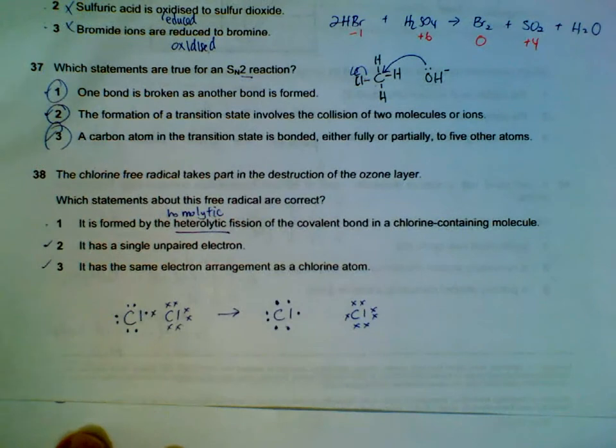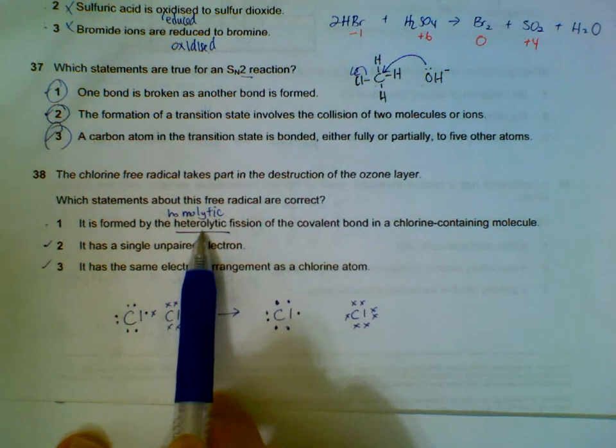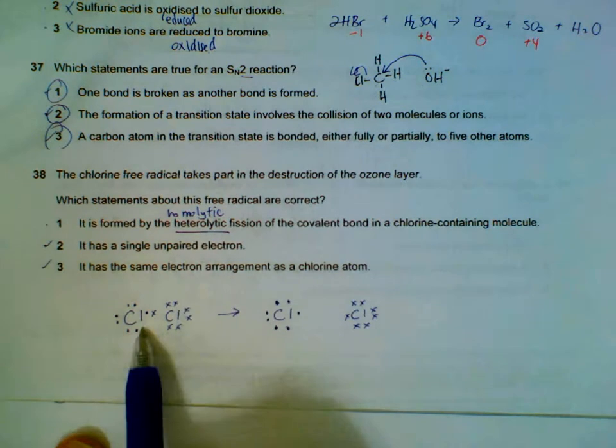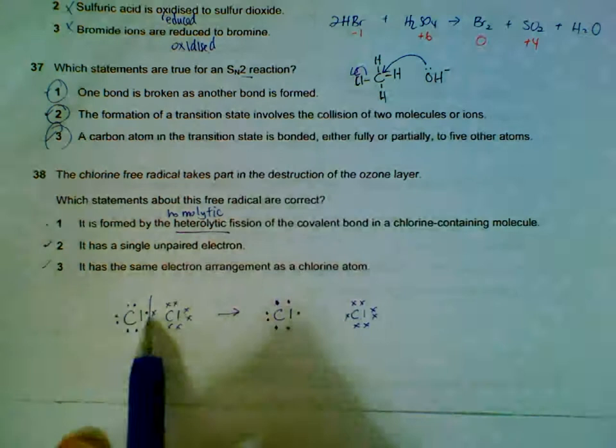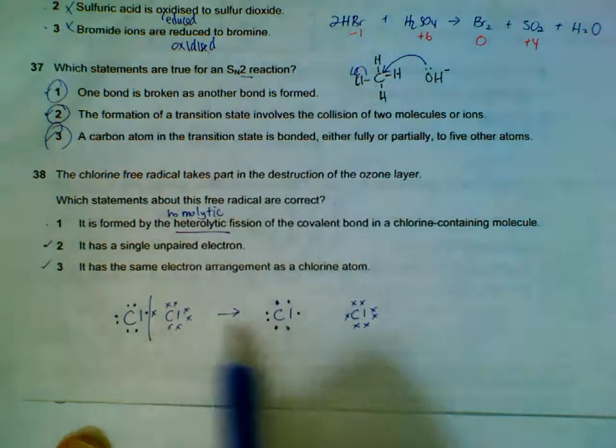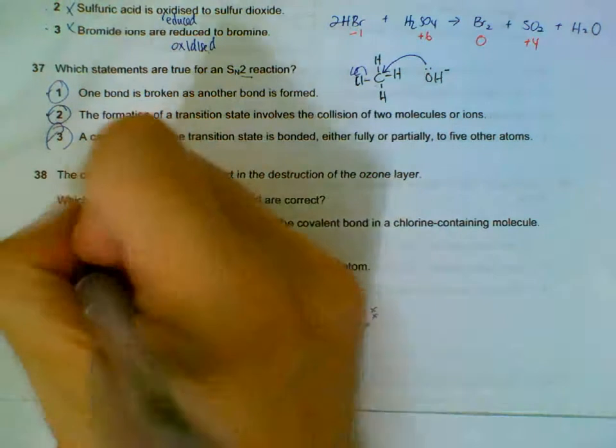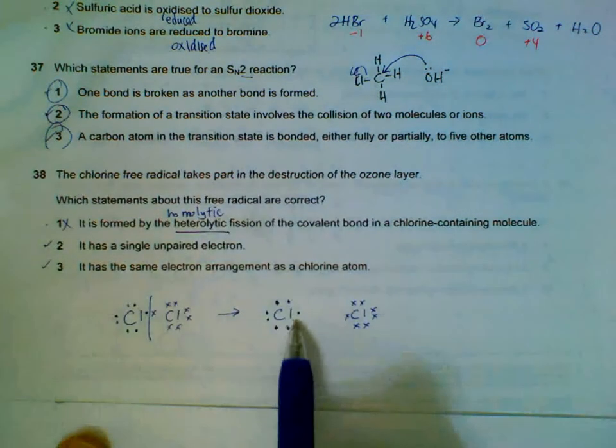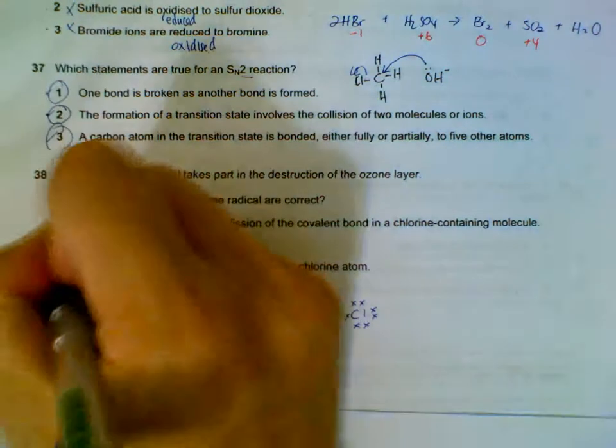Number 38: chlorine free radical is formed when there is homolytic fission. Electrons are split equally - for example, here we have a chlorine molecule, we'll break it evenly so that we get two chlorine radicals. So it's homolytic fission; statement one is wrong. Single unpaired electron is correct, and essentially is the same as a chlorine atom.